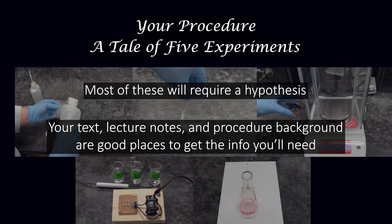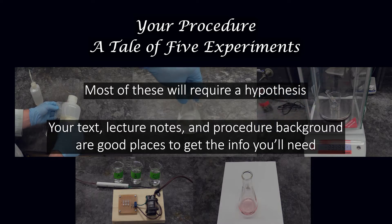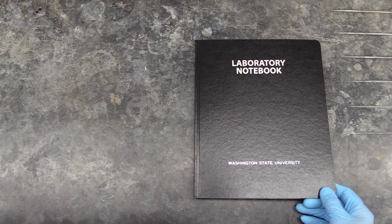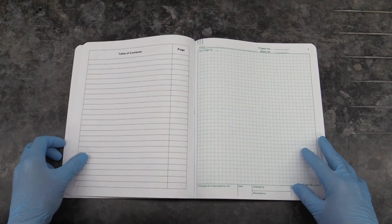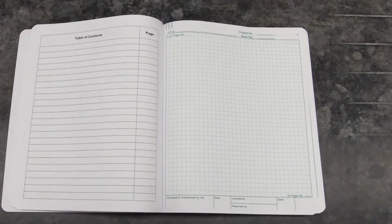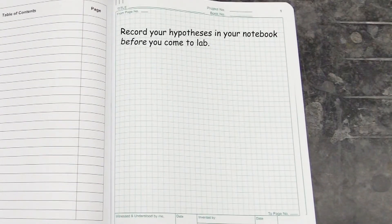Some of the info you'll need to do this is in the experiment background, and some is in your textbook and lecture notes. After you've learned what you can about the things you'll study in this experiment, you will make your hypotheses, note the plural, there'll be a few of them, in your lab notebook. And you'll need to do it before you come to lab.